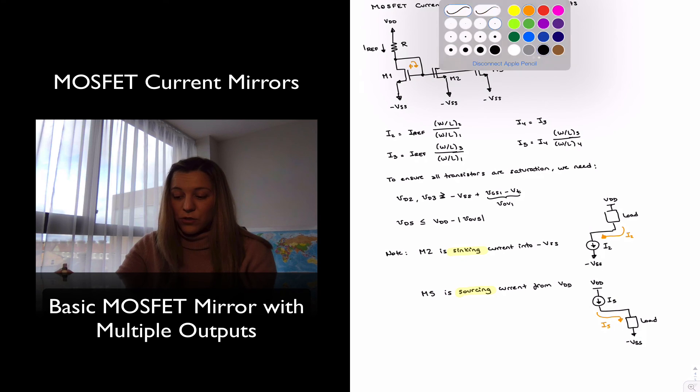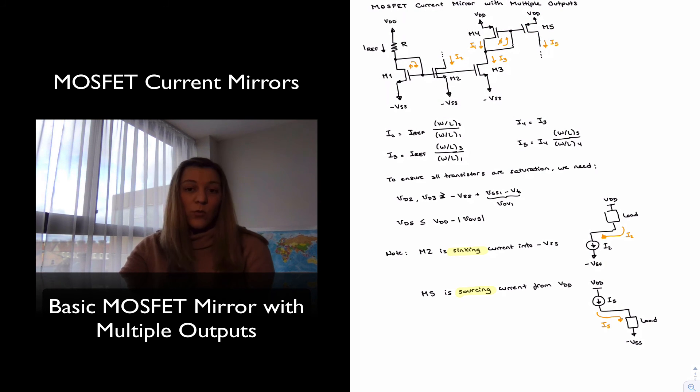Another thing to note about these circuits is we can alter the aspect ratio of the different transistors in order to create multiples of the reference current in different parts of the circuit. We don't always need all the stages in a circuit to be biased to the same current, so that's a useful feature.